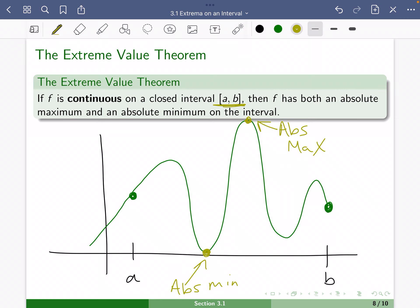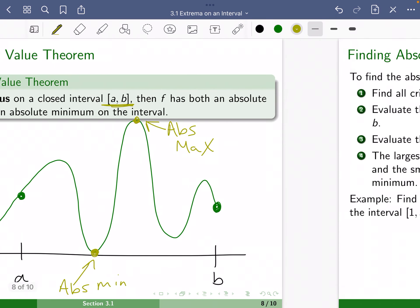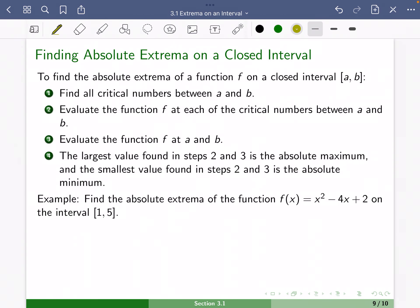So let's look at one example of this. To find the absolute extrema of a function on a closed interval a to b, what we want to do is first we're going to find all the critical numbers. So we want those critical numbers between a and b first. Evaluate the function at the critical numbers that are between a and b.